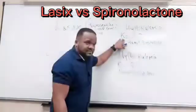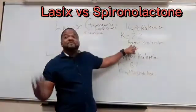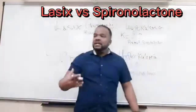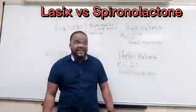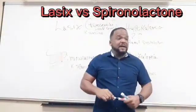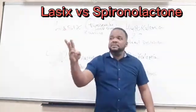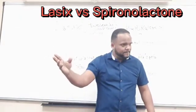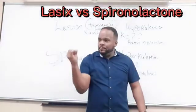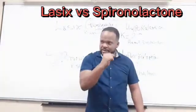Now, could you prevent hypokalemia? Yes — by teaching the patient to eat more potassium-rich foods. Give me a few examples: banana, potato, tomato, avocado. Remember the foods ending in '-o': potato, tomato, avocado, banana — all rich in potassium. Those are the ones I've seen on the exam.